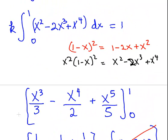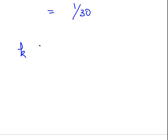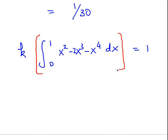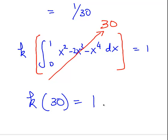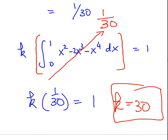Let's just put that all back together. We have k, and we have that integral equals 1. What we are saying is that this is equal to 1/30. So k times 1/30 is equal to 1, therefore k is equal to 30.